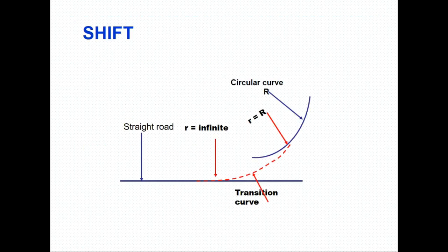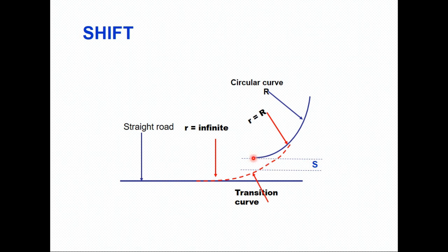When a transition curve is provided in the field, there is an important parameter called shift. The tangent length of the road connects to a circular curve, and between these two the transition is provided. Since the transition is spiral in shape, the circular curve is moved slightly inward — that inward movement is called the shift S. The shift is given by the equation S = Ls² / (24R).